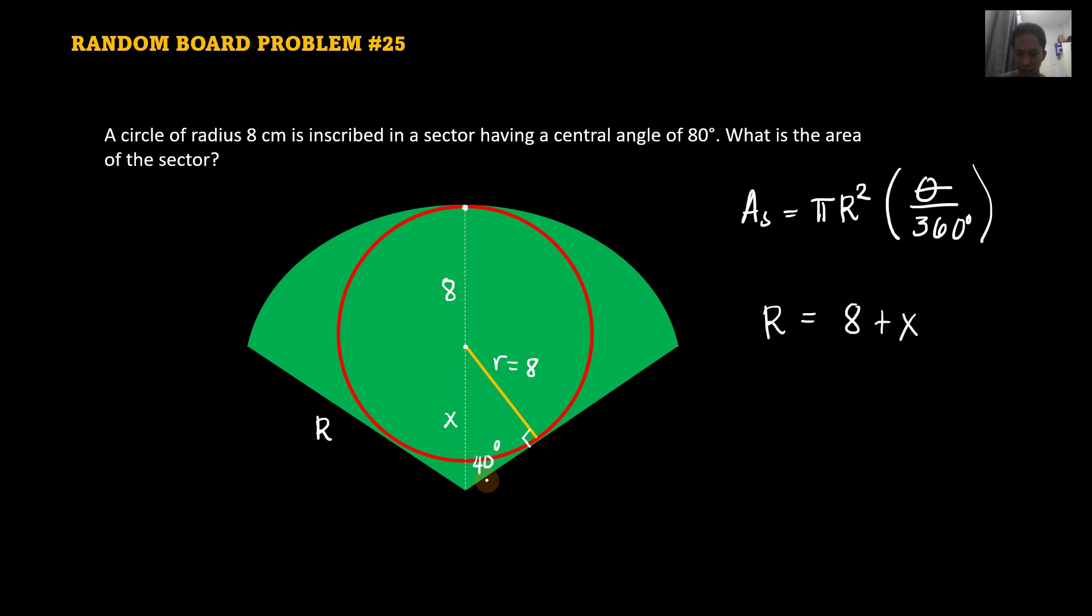Where the x, we can get that using this right triangle. So our 8 is an opposite side. Opposite to the 40 degrees angle. So that is sine. So sine 40 degrees is equal to 8.